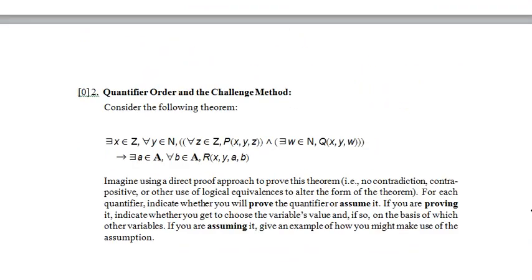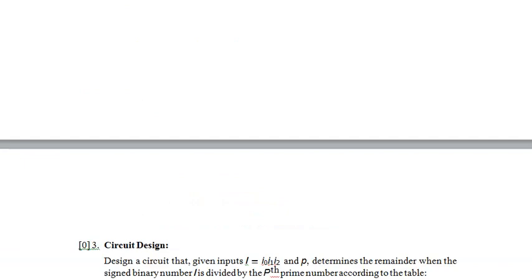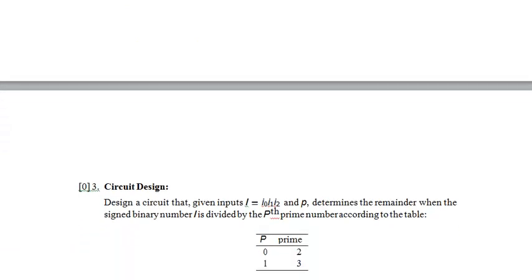The next question gives a big messy-looking theorem and says to imagine using a direct proof approach to prove it. For each quantifier, I need to indicate whether I will prove it or assume it, whether I get to choose the variable's value, and if assuming it, give examples of how I might use those assumptions. It's a big messy statement, but I'm only dealing with each quantifier - there are 1, 2, 3, 4, 5, 6 of them. It doesn't look too hard, so I'd mark it to come back to.